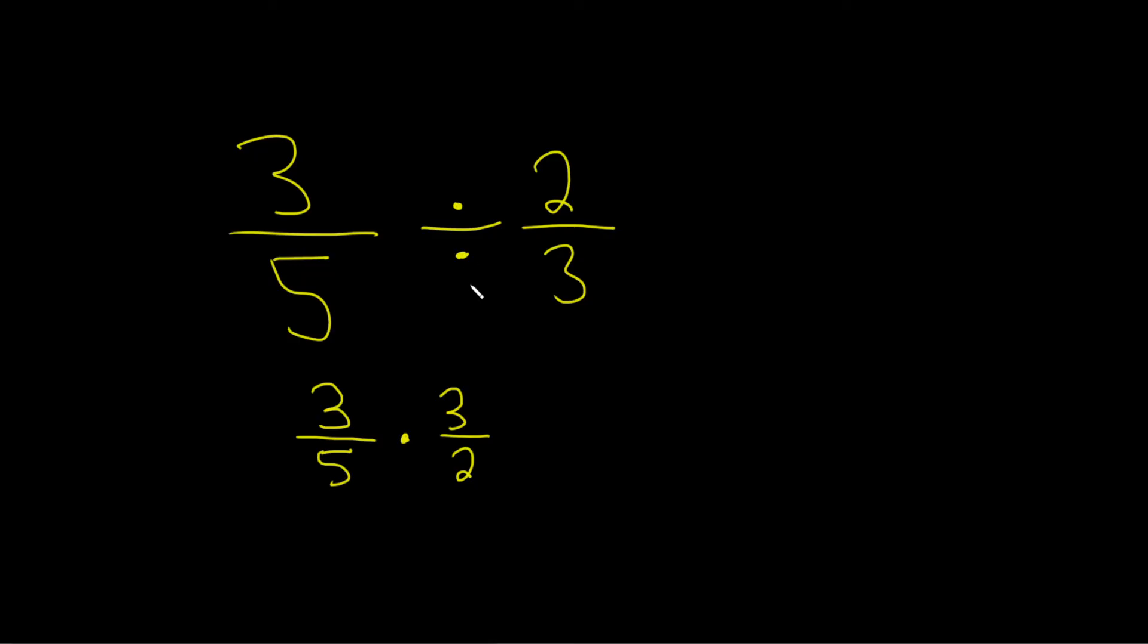The correct way to say it is, division is multiplication by the reciprocal. Super key. This is a super important fact even in higher level math. So whenever you're dividing by a number, you change it to multiplication and you flip it.